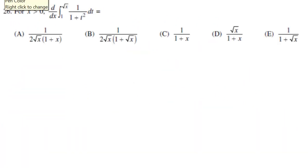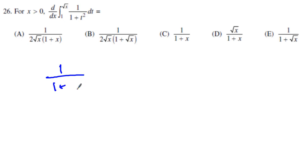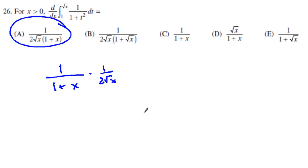Number 26 — Fundamental Theorem of Calculus again. I plug in square root of x, giving 1 plus (square root of x) squared, which is just x. But I also have to take the derivative of x to the one half, which is 1 over 2 root x. So the answer is A.